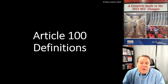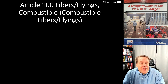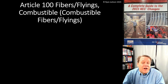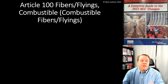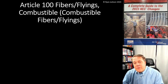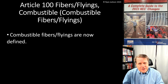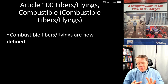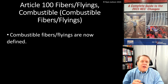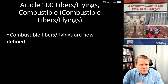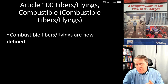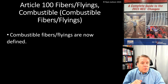Article 100 covers combustible fibers and flyings. A definition for ignitable fibers and flyings has finally been added. There are three main types of classified locations in the NEC: Class 1, Class 2, and Class 3. Class 1 is in Article 501, Class 2 is in Article 502, and Class 3 is in Article 503.